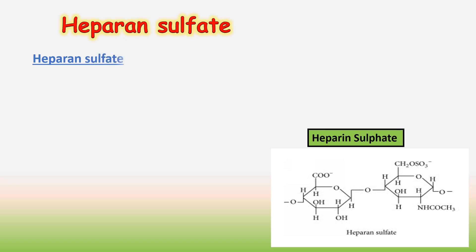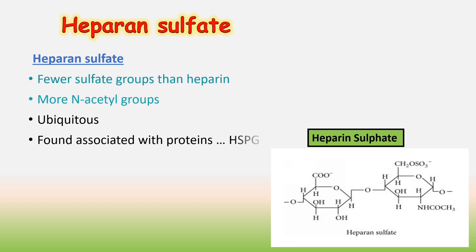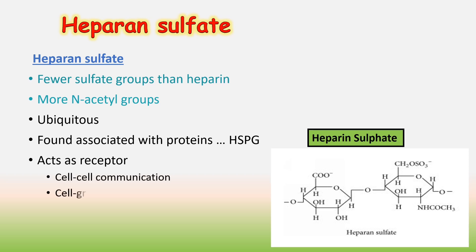Heparin sulfate has fewer sulfate groups than heparin and more N-acetyl groups. It is ubiquitous and found associated with proteins such as syndecans. Heparin sulfate acts as a receptor, and is involved in cell-cell communication and cell growth.